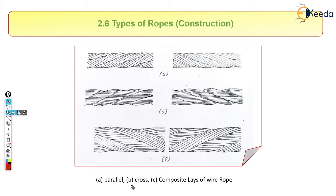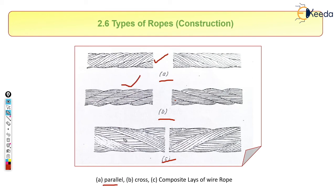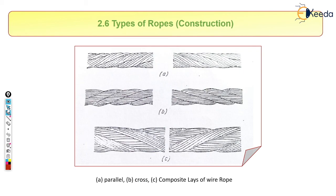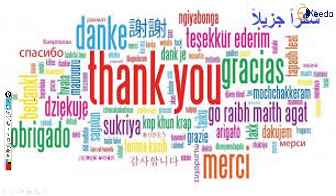As per the construction, there are different types of ropes labeled A, B, and C. In type A, the lines are vertical — these are parallel lay ropes. In type B, the lines are crossed — these are cross lay ropes. In type C, it is a composite of both — a mixture of cross and parallel lay. These are the types of rope as per their construction.